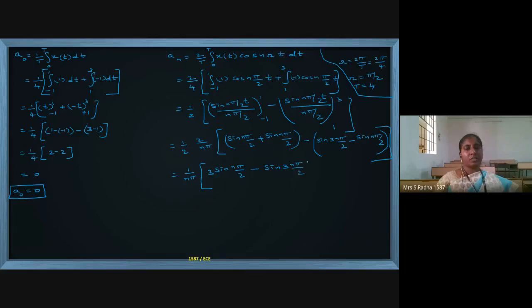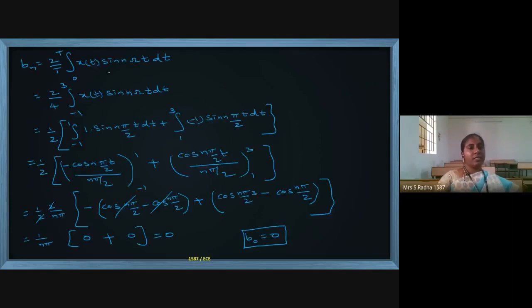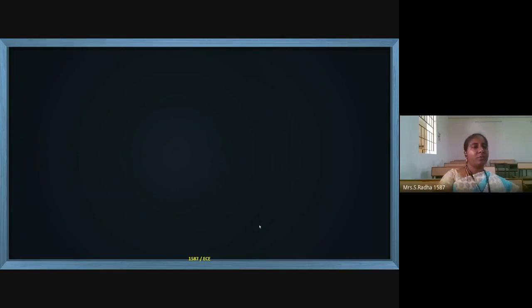So a₀ = 0. For bₙ, the formula is (2/T) ∫ x(t) sin(nωt) dt, where omega = π/2. From minus 1 to plus 1 the signal height is +1, and from 1 to 3 it is −1. When we simplify, bₙ comes out as 0.